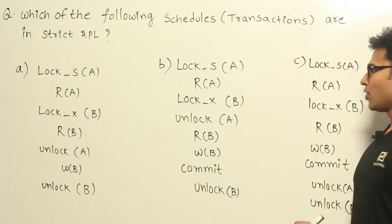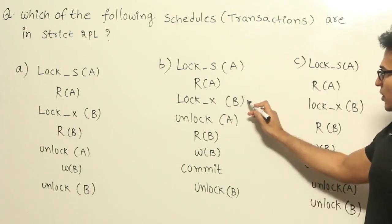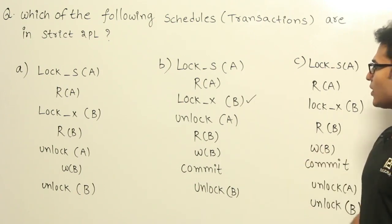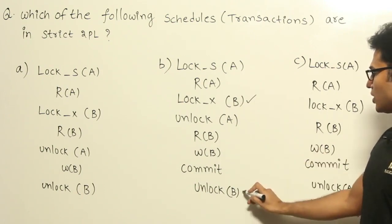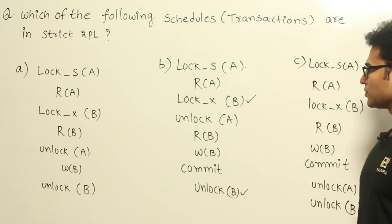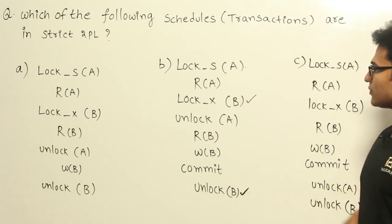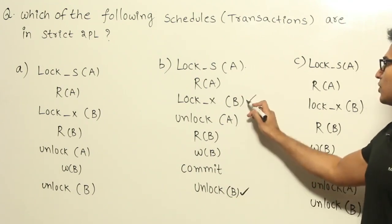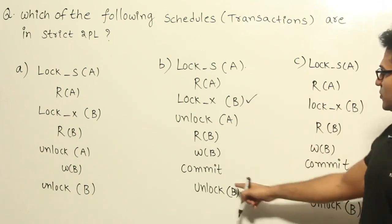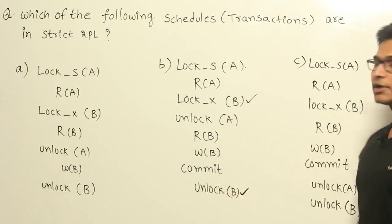Now look at this one. What are the exclusive locks? The exclusive lock in this case is B, and where did you unlock it? Only after you commit it. The other lock is not an exclusive lock, therefore it is definitely strict. All the exclusive locks present in the schedule are unlocked after the commit.